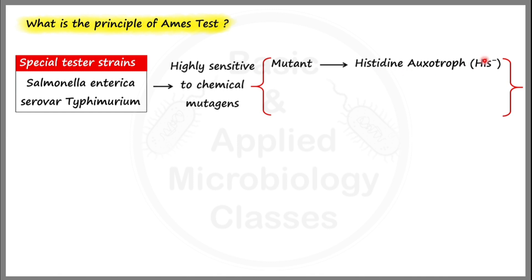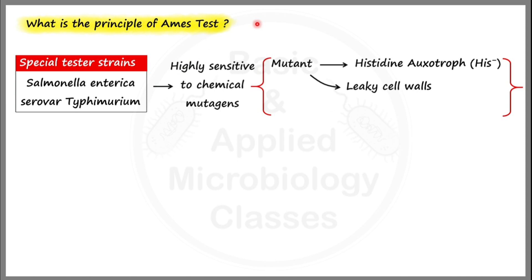The second level of genetic modification is done at the cell wall level. The mutation is done in such a way that it results in leaky cell walls. Leaky cell walls are desirable because they lead to increased permeability of these bacterial strains, allowing easy entry of test chemicals.